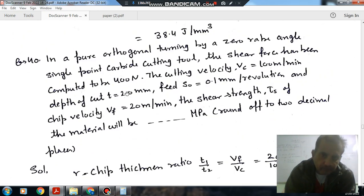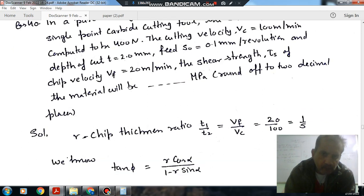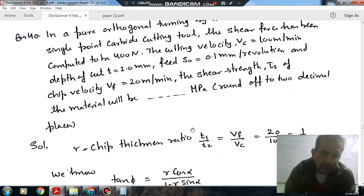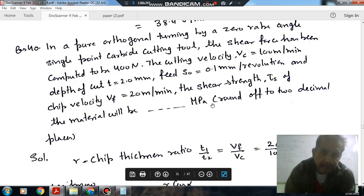Here the depth of cut D is 2mm. The chip thickness ratio is T1 by T2, where T1 is uncut thickness and T2 is your chip thickness. And it is equal to Vf by Vc. Because total volume will remain constant, the chip thickness ratio can be written as the ratio of velocities, assuming the width of the chip is constant.